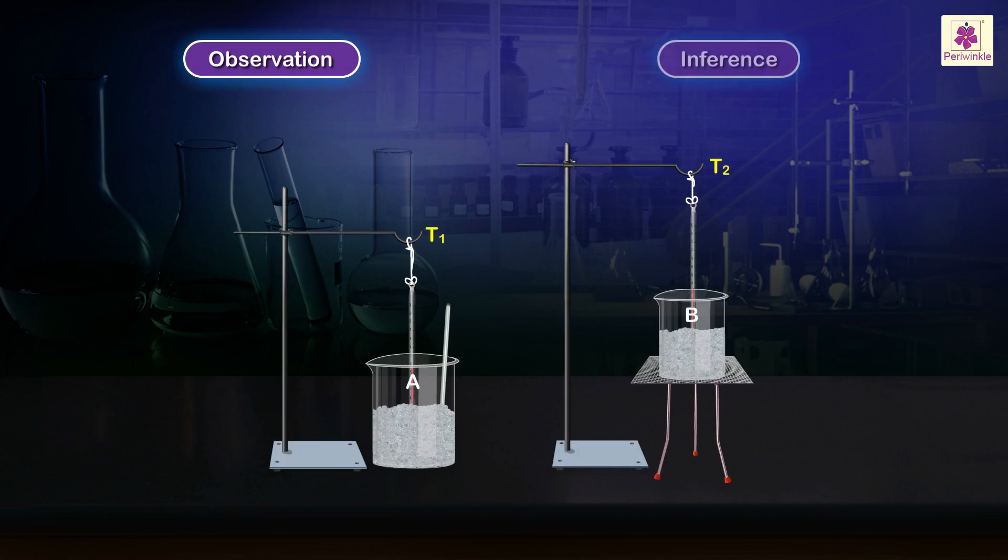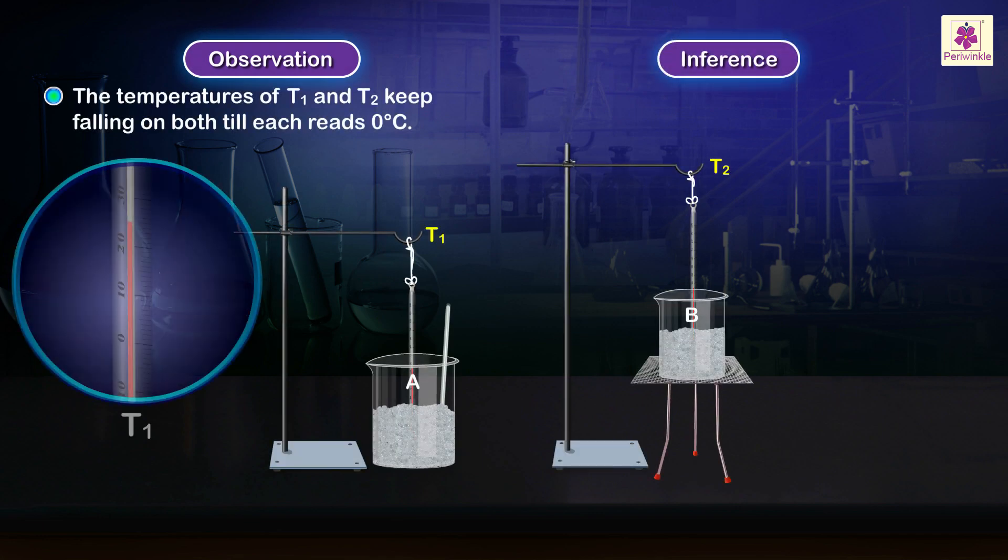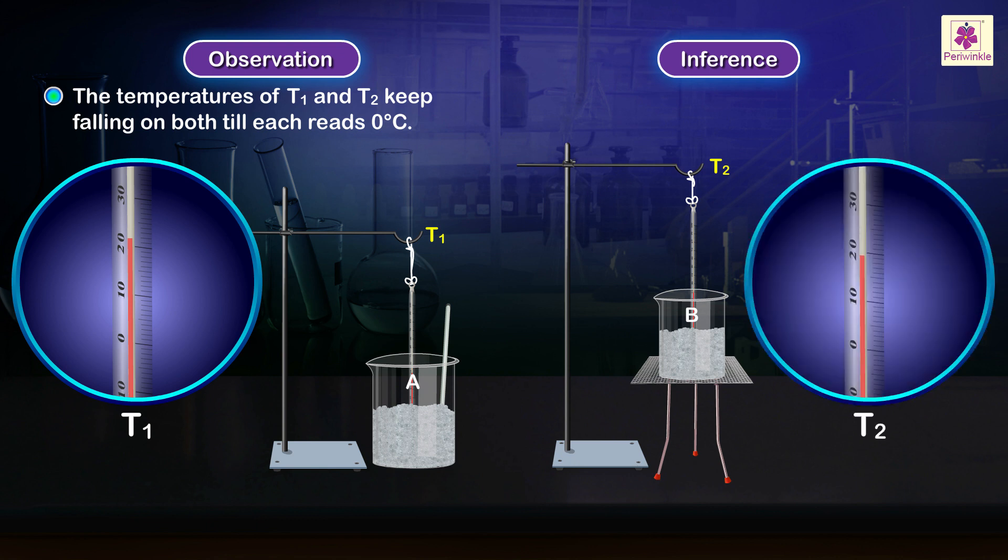Observation. Inference. The temperatures of T1 and T2 keep falling on both till each reads 0 degrees Celsius. Crushed ice is at 0 degrees Celsius.